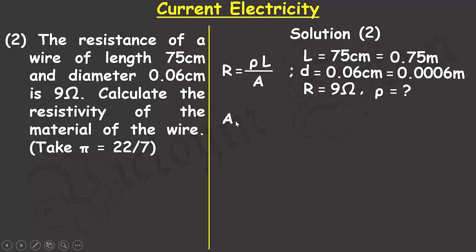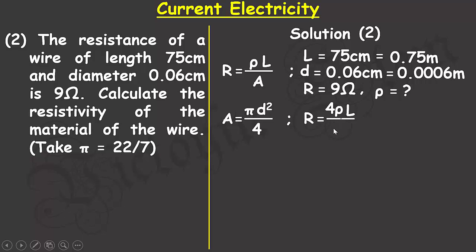The cross-sectional area is circular in nature, and the area of a circle is pi d squared divided by 4. Substituting this area into the resistivity equation, the resistance becomes 4 rho L divided by pi d squared.